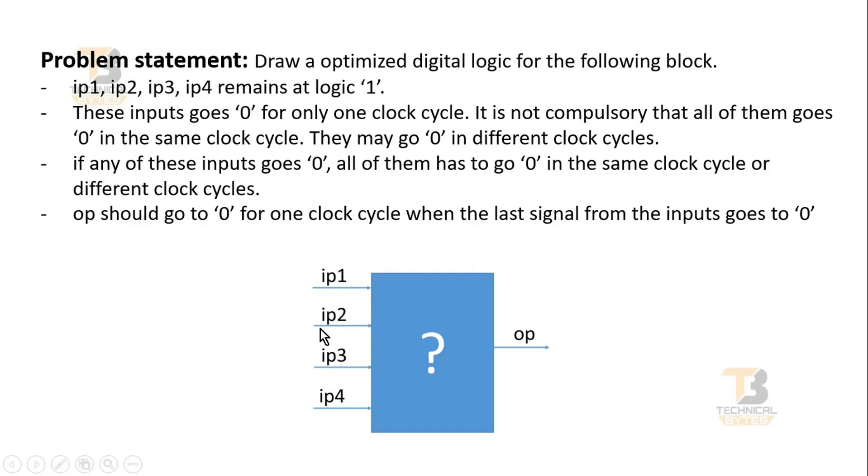But if any one of these inputs go '0', all of them has to follow. They may go '0' in the same clock cycle or in different clock cycles. And this cycle of going to zero may happen n number of times.